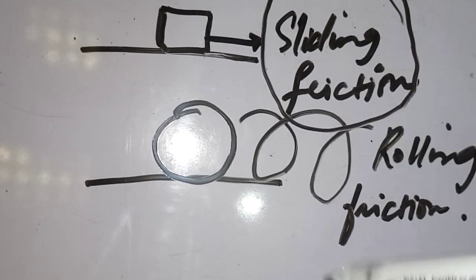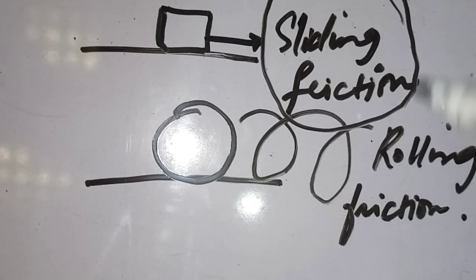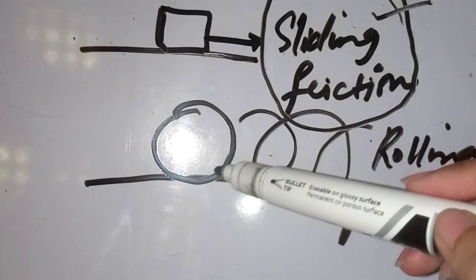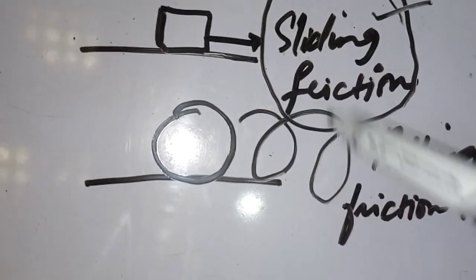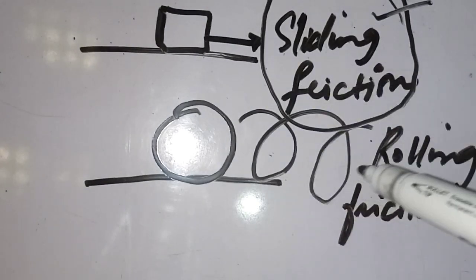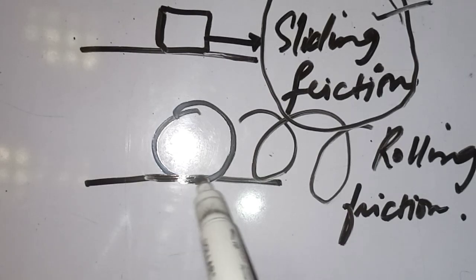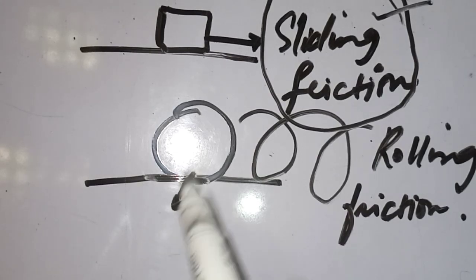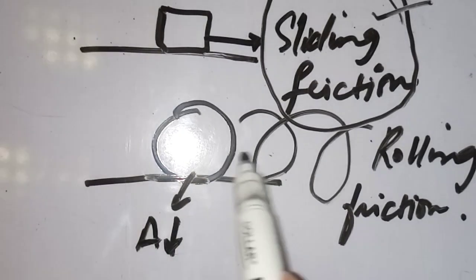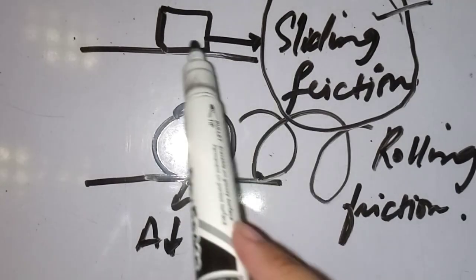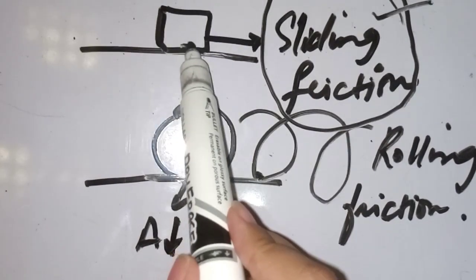When there is a tire or a rolling object, rolling friction is less than sliding friction. Why? Because when the object is rolling on the surface, the contact area is very small — only a tiny point of the object touches the surface at any given moment.